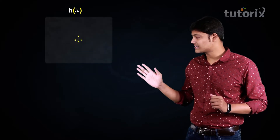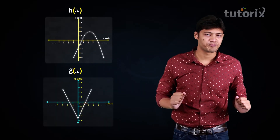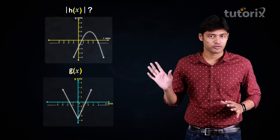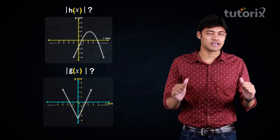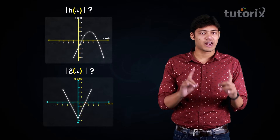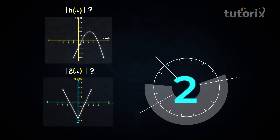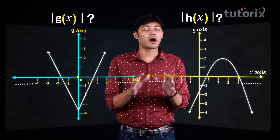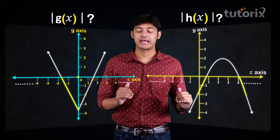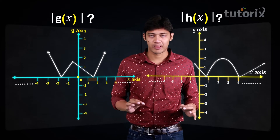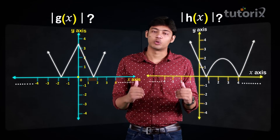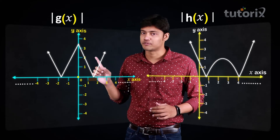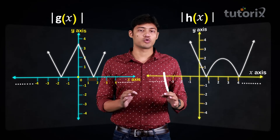There are two functions h(x) and g(x) whose graphs are shown. You have to draw the graphs of |h(x)| and |g(x)| using the concept we just learned — pause your screen and try. In both graphs, we look at the part below the x-axis and take the mirror image of those parts with respect to the x-axis, giving us the graphs of |g(x)| and |h(x)|.